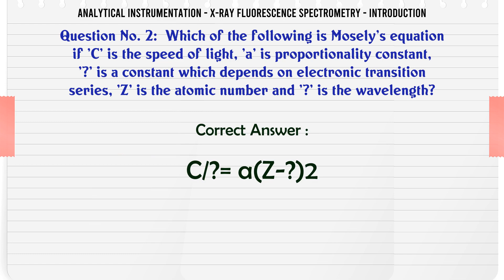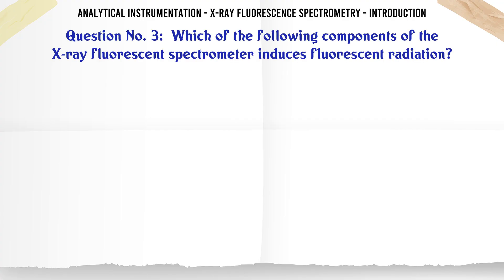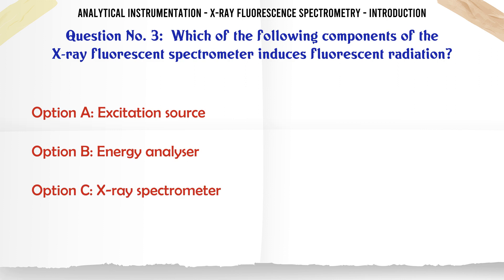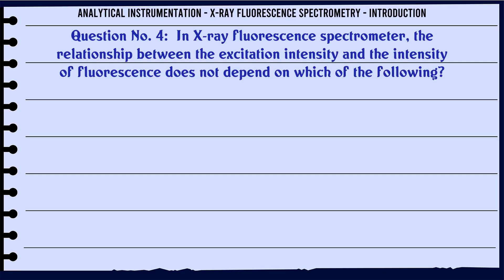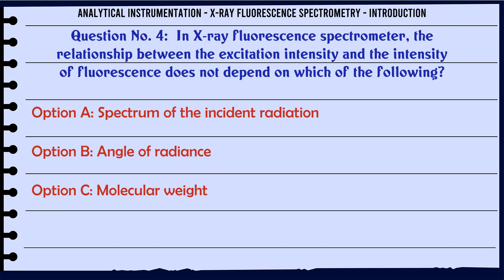Which of the following components of the X-ray fluorescence spectrometer induces fluorescence radiation? Options: a. Excitation source, b. Energy analyzer, c. X-ray spectrometer, d. Detection system. The correct answer is: Excitation source.